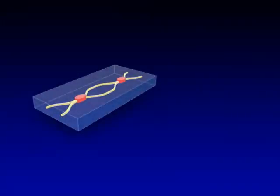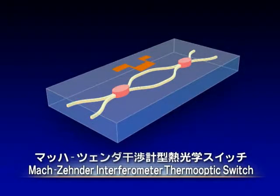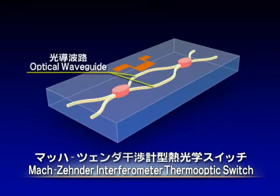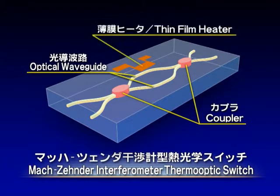Their underlying devices are the Mach-Zender interferometer thermo-optic switch and the AWG or arrayed waveguide grating. The Mach-Zender interferometer thermo-optic switch is composed of two optical waveguides, two couplers, and a thin film heater.